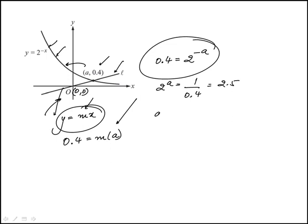To find a, that's log base 2 of 2.5, which is the same as natural log of 2.5 over natural log of 2. So I'm changing base here.